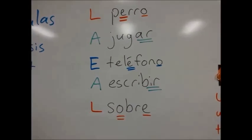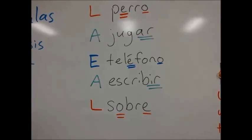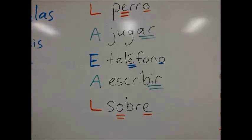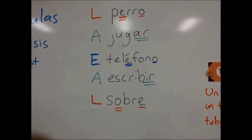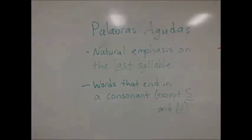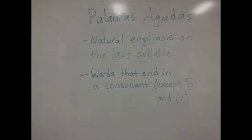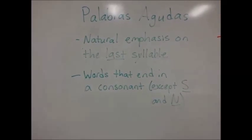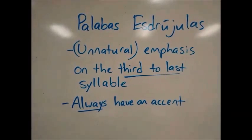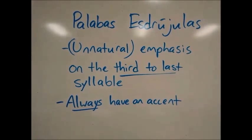I've underlined the emphasized syllable, and also underlined the letter that each word ends with. Let's see if you can figure out the pattern that makes a word llana, aguda, or esdrújula. Aguda words end in consonants, except for N and S — that means every verb in the infinitive is an aguda word. Llana words end in a vowel, S, or N. Palabras esdrújulas always have an accent on the third to last syllable — they are not naturally occurring.